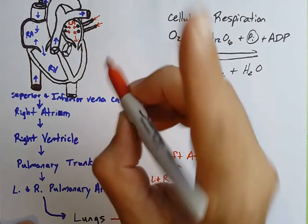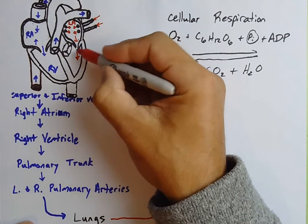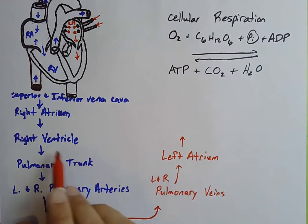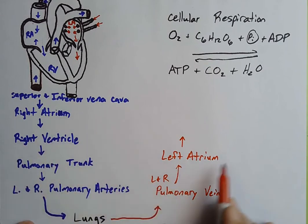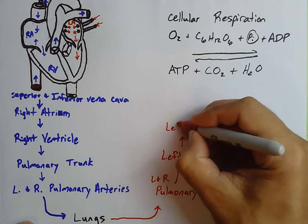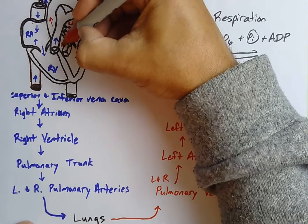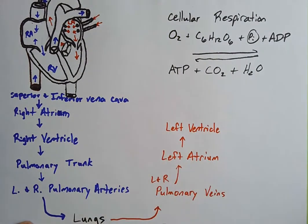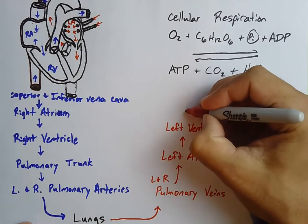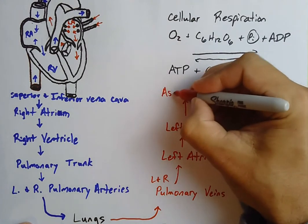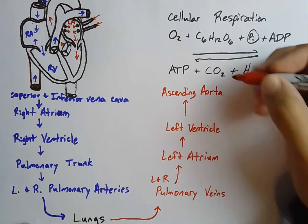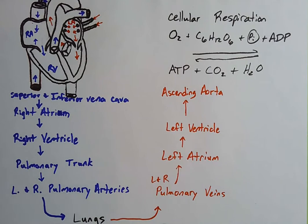Blood passes through the pulmonary veins into this large chamber on the left side — the left atrium. Just as the right atrium sent blood to the right ventricle, the left atrium sends blood to the left ventricle. From the left ventricle, blood passes out into another major artery leaving the left side of the heart, called the aorta. The very first portion is called the ascending aorta, and you'll learn more about the different portions and arterial supply to the rest of the body in a later lecture.